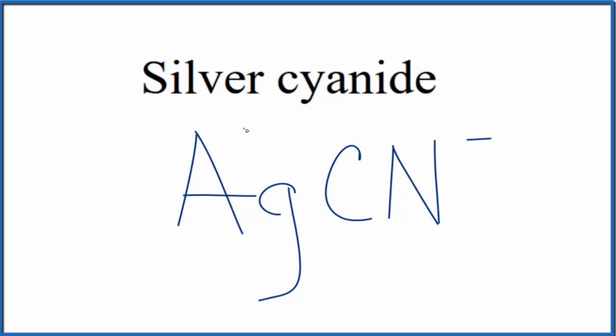Silver is a transition metal, but it's always 1 plus. The cyanide ion, the whole thing here, is 1 minus.